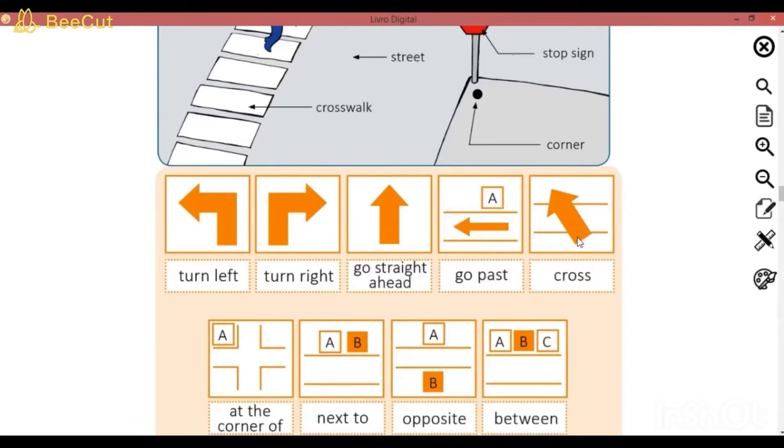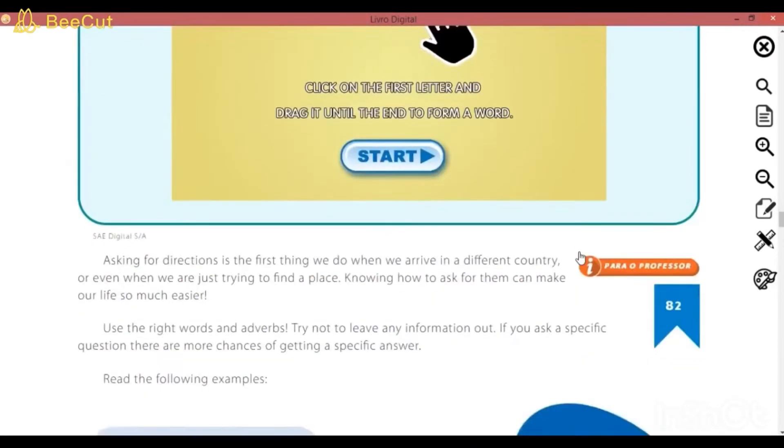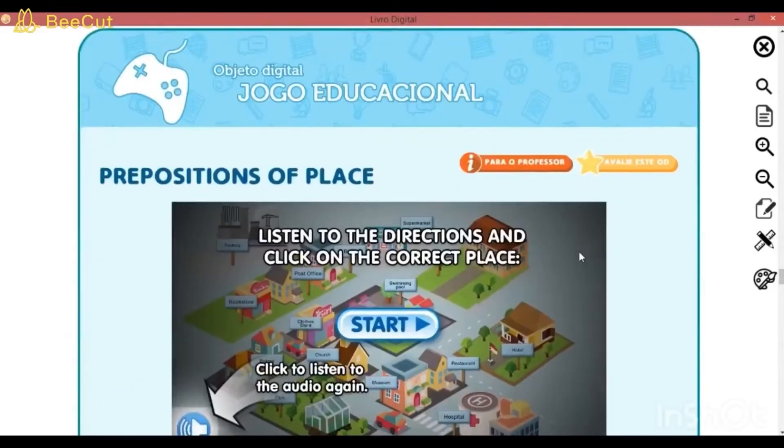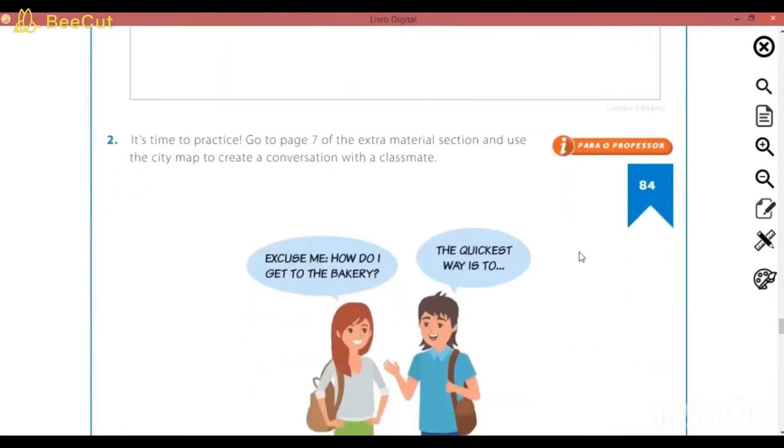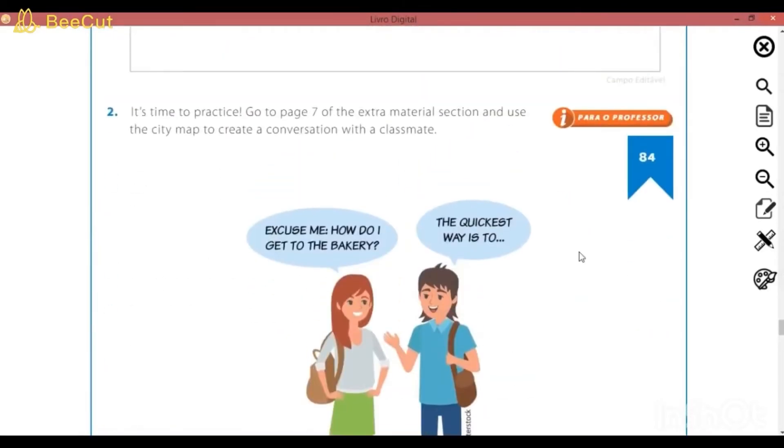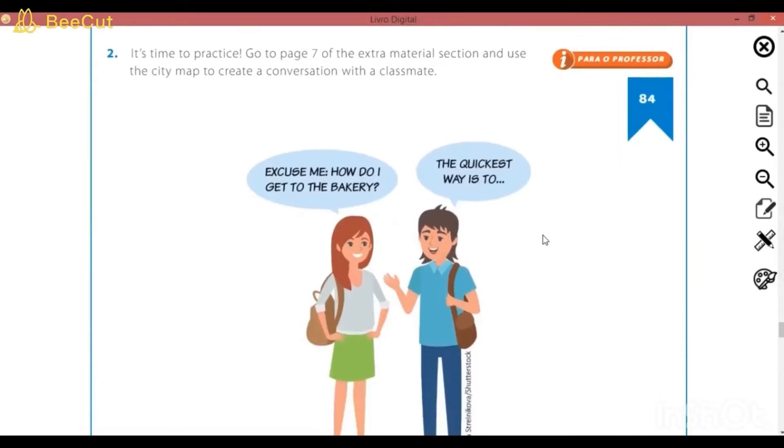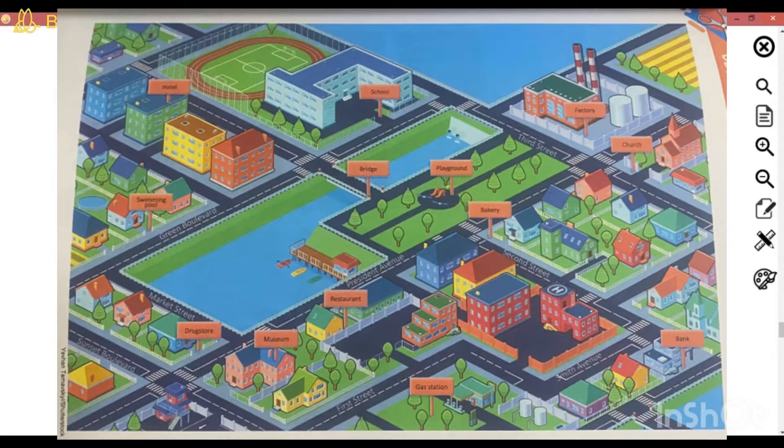Então, o que é que vocês vão fazer na aulinha de hoje? Vocês vão praticar, tá certo? Nossa atividade é lá na página 84. Inicialmente, vocês vão pegar um mapa que tem na página 7 do material extra. Onde é que fica o material extra, que a gente costuma chamar de material de apoio. Fica no final do book. Vocês vão até lá. Vão destacar esse mapa.